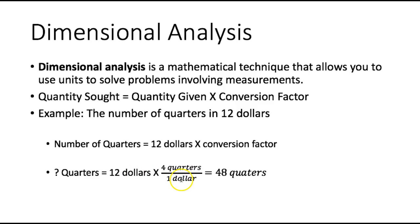I use this fraction because I want dollars to cancel out. If dollars starts on the top of the very first unit, then I need dollars to be the unit on the bottom of my next fraction so it can cancel out. Once dollars cancels out, I can solve my math problem. So I'm taking 12 times 4 and that gives me 48 quarters.